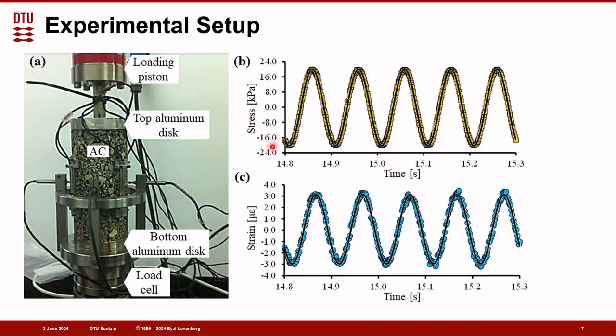Take note, the stress level here is quite small, ranging between plus and minus 16 kilopascals. And the strain level is also very, very small. This is the result of the average of four LVDT readings, and you can see that the strain level is plus minus three microstrains, so an amplitude of about three microstrains.